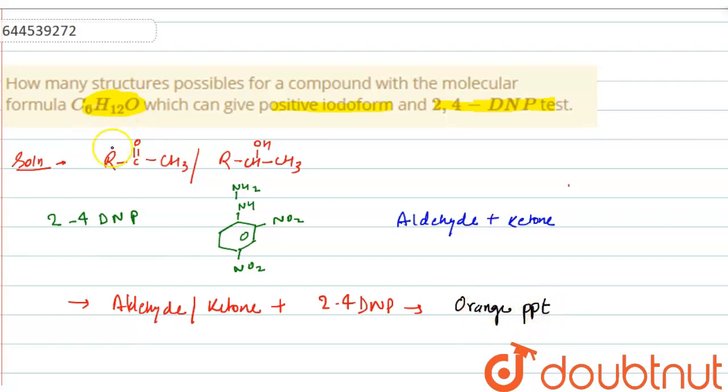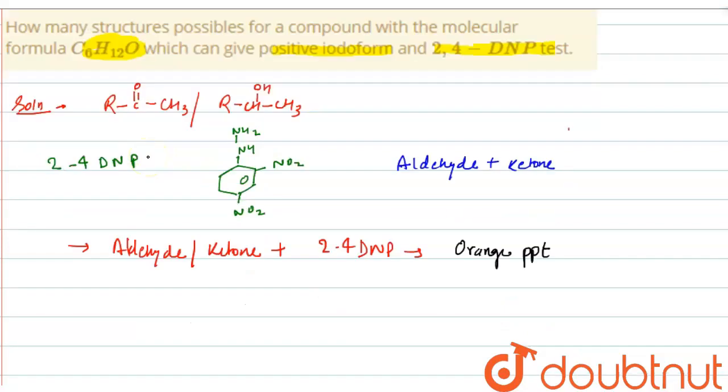And iodoform test, when these compounds react with iodine and NaOH, it forms CHI3 which is yellow in color along with 3 mol of NaI.